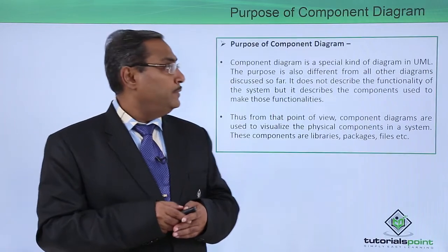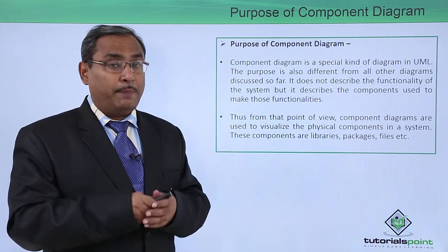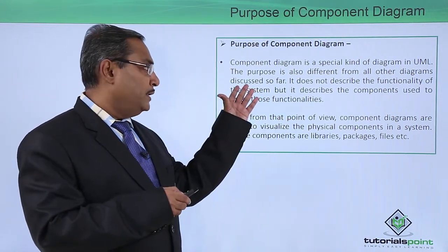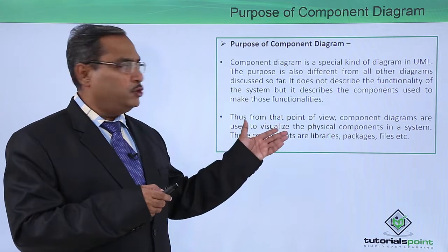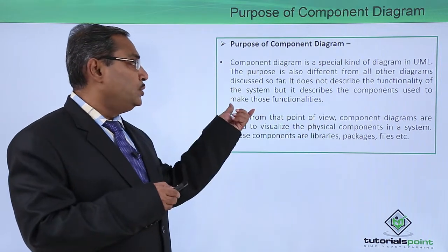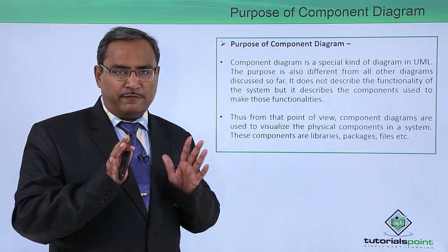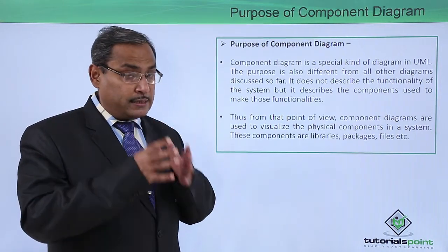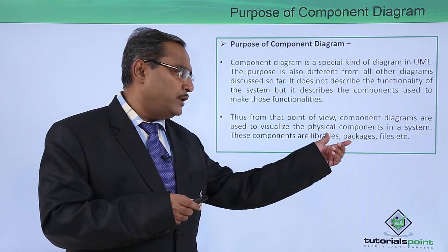Here we are discussing with some diagrams the purpose of a component diagram in UML. Component diagram is a special kind of diagram in UML. Its purpose is different from all other diagrams discussed so far — it does not describe the functionality of the system, but describes the components used to make those functionalities. Component diagrams are used to visualize the physical components in the system.